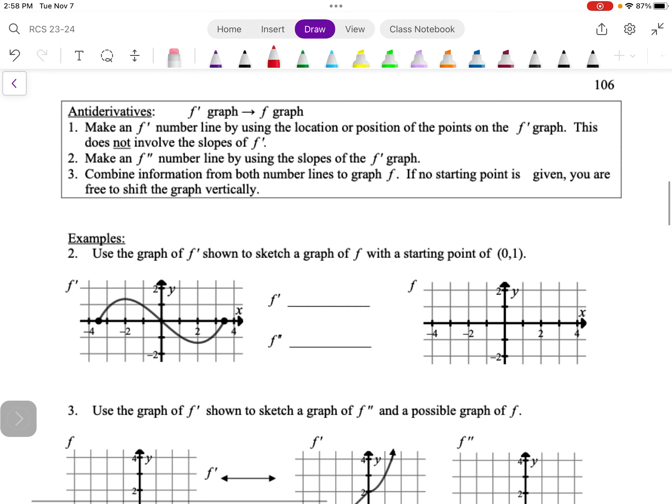Let's go on to example two. For these, we're going to be doing antiderivatives, so now we're going backwards. So we've got a graph of f prime, we're looking at a graph of the slope, and we're going to be going to a graph of the function. So make an f prime number line by using the location or position of the points on the f prime graph. And that does not involve the slopes of f prime. Then make an f double prime line by using the slopes of the f prime graph. Combine information from both lines to graph f. And if no starting point is given, you're free to shift the graph vertically.